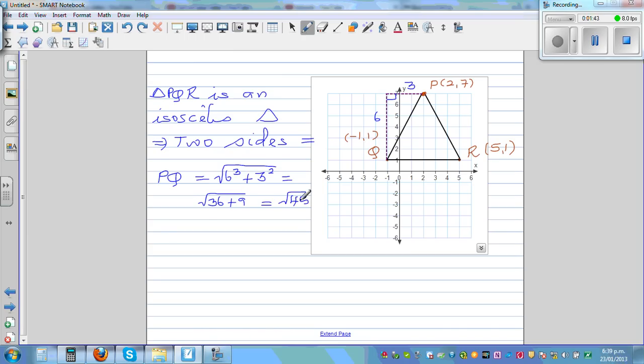To be exact, square root of 45. If you want to write in the surd form, square root of 45 is same as writing square root of 9 times square root of 5. So to write in the surd form, PQ is 3 root 5 units.